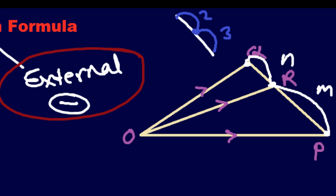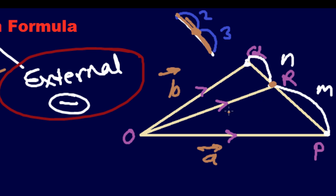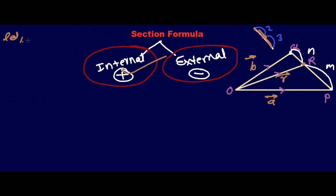The point of division — the point of section — is inside the line, which is why this is called internal section. If the point were outside the line, that would be called external section, which we'll cover in the next video. Let's name the vectors: vector OP is vector a, vector OQ is vector b, and vector OR is vector r.